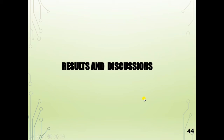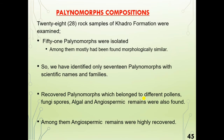Results and discussion. Palynomorph composition: 28 rock samples were examined and 51 palynomorphs were isolated. Among the recovered palynomorphs, there are different types of pollen grains, fungi, algal remains, and angiosperm remains.